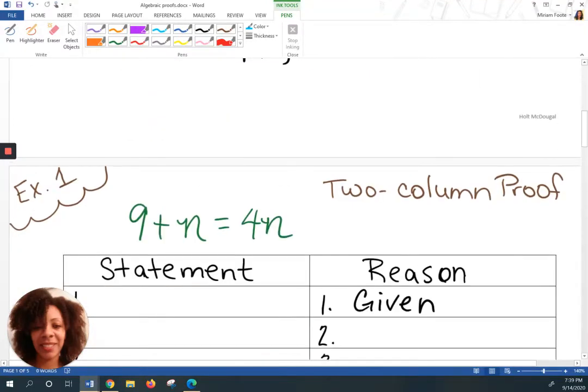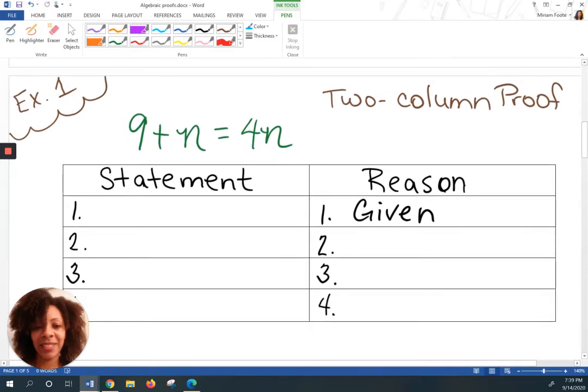So I've set up what's called two-column proofs. You have two columns and you're trying to justify each step along the way. So the first column heading is called statement. That's where you're actually showing your work. So the first thing I'm going to write down is the problem. 9 plus N equals 4N. Typically, this is not written for you. So why? Why am I writing this? Because it was given. So my reason would tell me the justification. This is where I will use the property of equality categories.